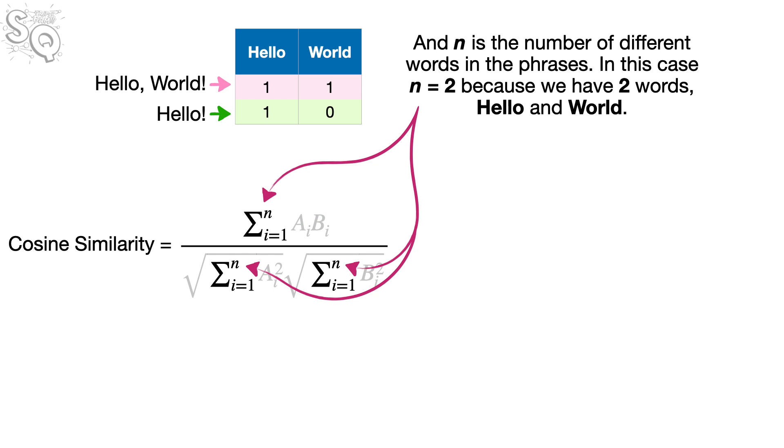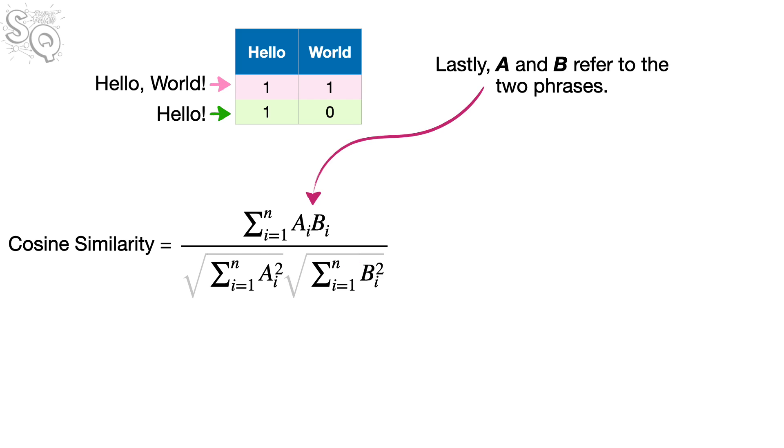And n is the number of different words in the phrases. In this case, n equals 2 because we have two words, hello and world. Lastly, a and b refer to the two phrases.